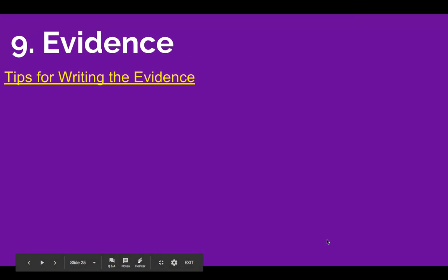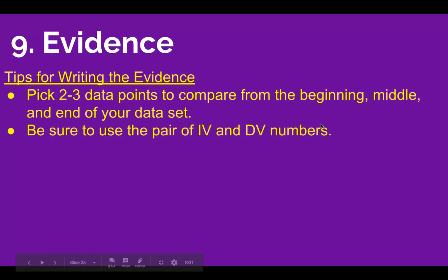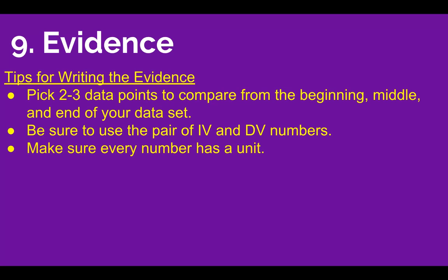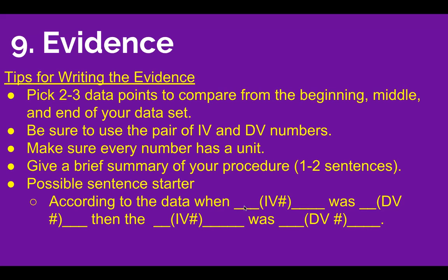Here are some tips for doing your evidence. Pick two to three data points to compare from the beginning, middle, and end of your data set. Be sure to use the pair of IV and DV numbers — don't just give the DV number; make sure you pair that with your IV. Make sure every number has a unit and give a brief summary of your procedure, one to two sentences long. A possible sentence starter: 'According to the data, when [IV] was [value], then the [DV] was [value].' Pair these up and put them in a sentence.